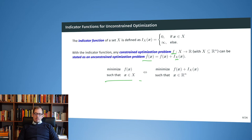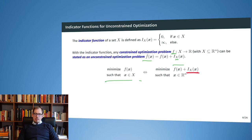On the unconstrained side, for all solutions outside my set X, the indicator function returns infinity — it explodes — and therefore excludes all results outside X, given that there are some feasible solutions within X.